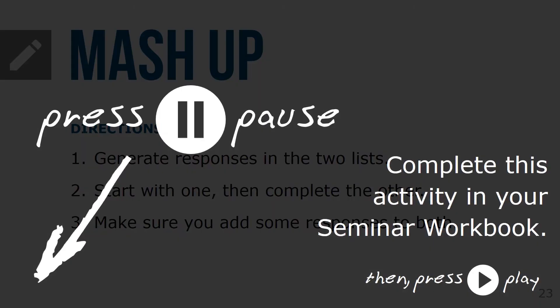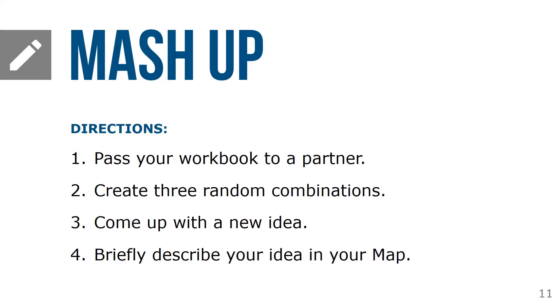Press pause now to complete this activity in your workbook. When you're finished, press play to continue. Still on page 24, let's continue the mashup. Here are some more directions: pass your workbook to a partner, or share your thoughts with someone you interact with on a regular basis. Have them create three random connections, pairing one item from each category. If you're not with someone right now, just do it yourself, but make sure your pairings are random.